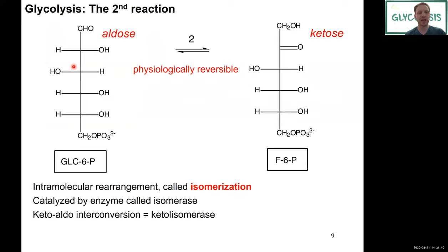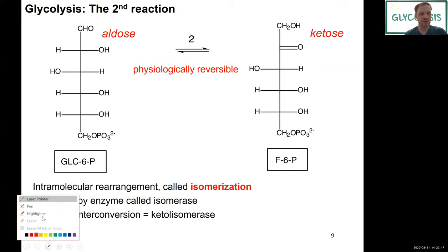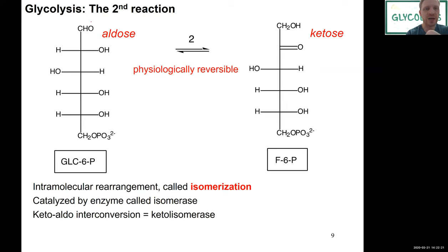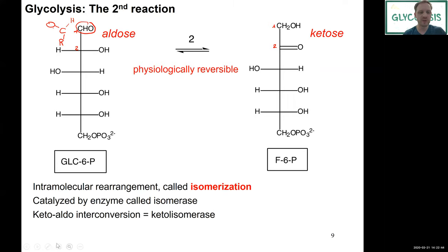Step two: we have glucose-6-phosphate and we now perform an isomerization — a rearrangement within the molecule. Glucose-6-phosphate is an aldose with an aldehyde group at C1. What we do is move the carbonyl double bond from C1 to C2. If you draw it out, you can see the C=O shifting from carbon one to carbon two — we're doing an isomerization.